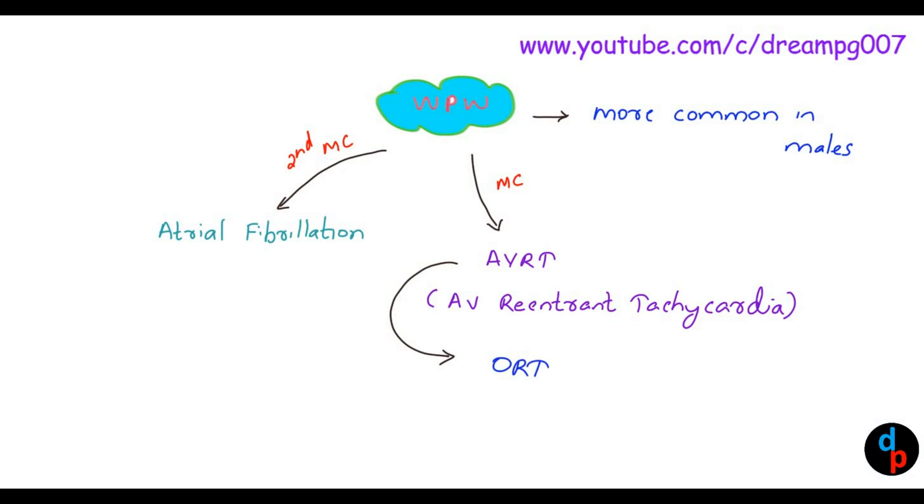Among the AVRT, the most common type is ORT, Orthodromic Reciprocating Tachycardia.